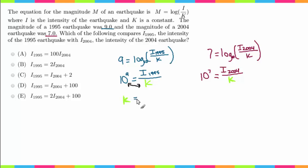So that being said, this will become K is equal to I 1995 over 10 to the 9th. Now let's go ahead and do that same thing over here. So again, I'm just going to flip these two numbers and I'm going to get K is equal to I sub 2004 over 10 to the 7th.